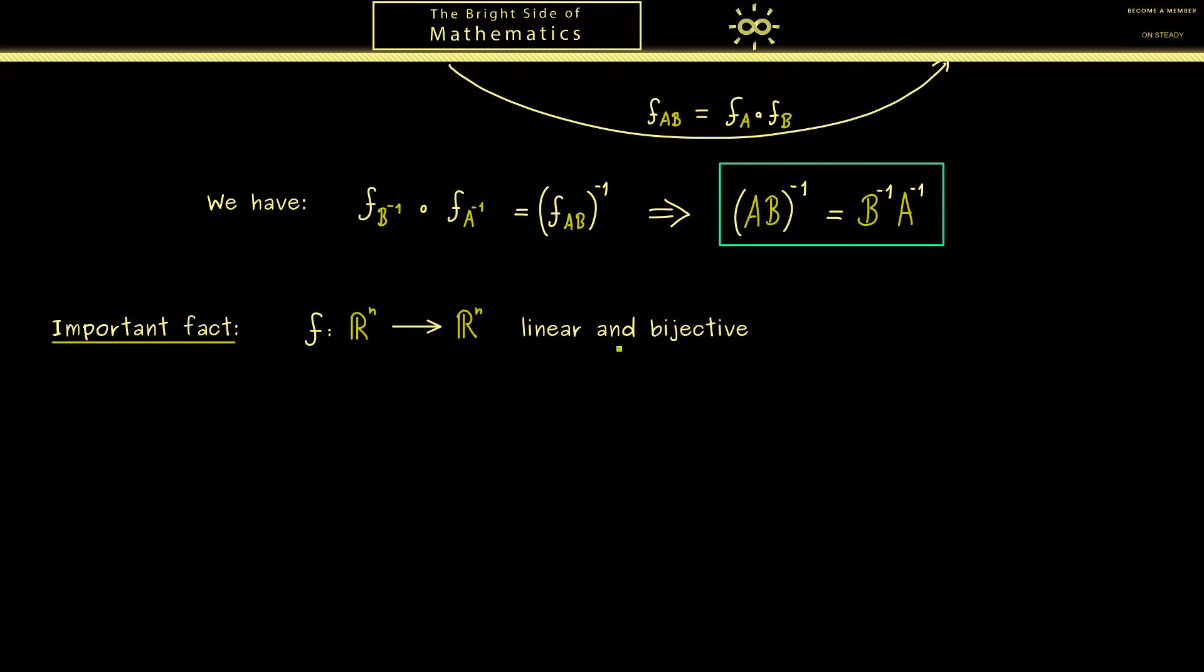However now in addition we also assume that the map f is a bijective map. This means that the map f inverse is well-defined. But now the important conclusion is that f inverse is also a linear map. This means that f inverse also conserves the linear structure of the vector space. In some sense this fact we have already seen in the matrix picture from above.